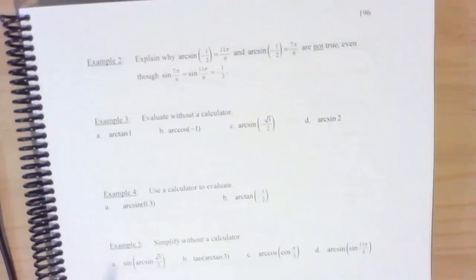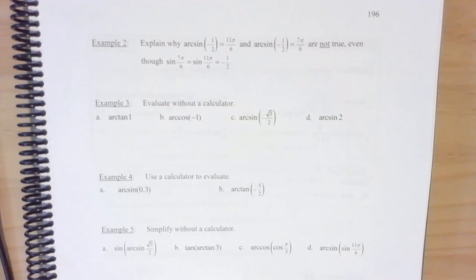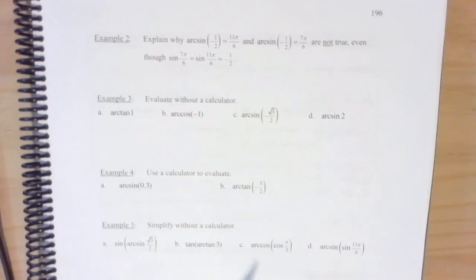Example two asks why arc sine of negative one half equals 11π/6 or 7π/6 are not true — they're in the wrong quadrants. And even though 11π/6 is in the fourth quadrant, we don't want that full angle; we want to go clockwise to give us negative π/6.